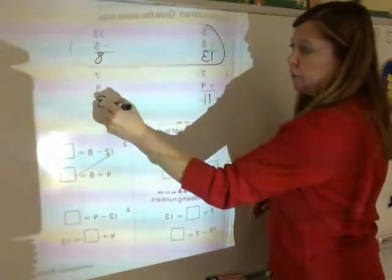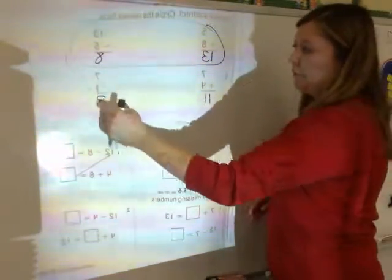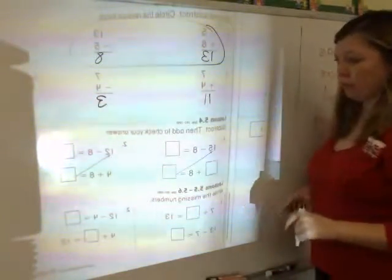7 minus 4 is 3. So here I have 7, 4, and 11, here I have 7, 4, and 3, so these are not related. I'm not going to circle them.